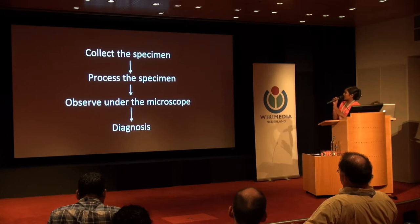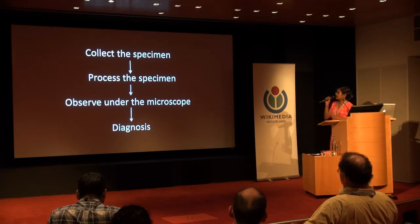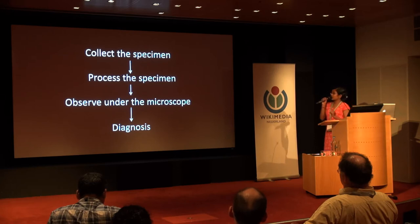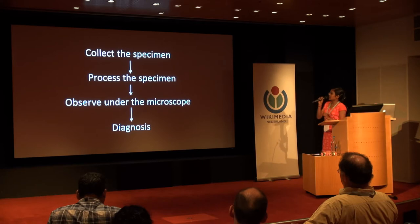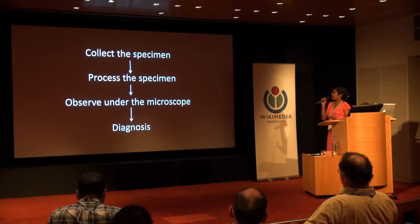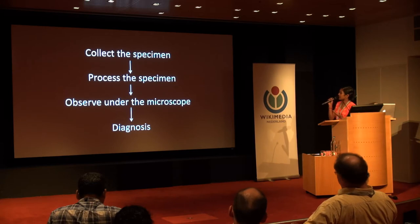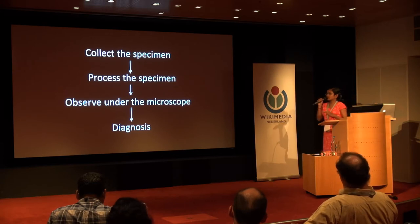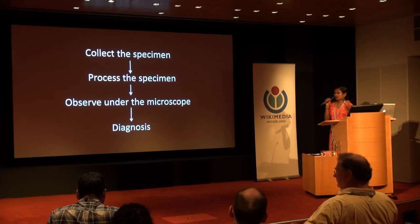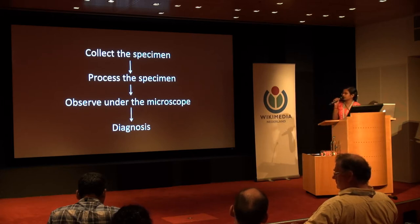I have put up a flowchart which shows the process in a very simple way. Your doctor first collects the specimen from your body, then they send it to the laboratory where they process it — they embed it, they color it, and they put it under the microscope. One of the doctors or an expert technician looks through the microscope, and then they arrive at the diagnosis.